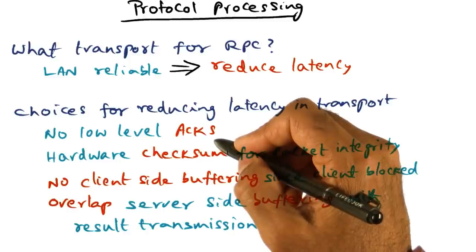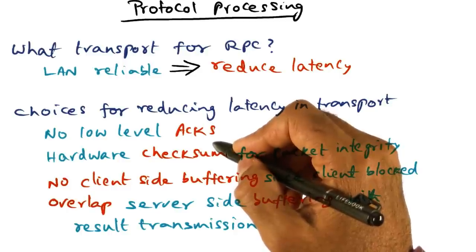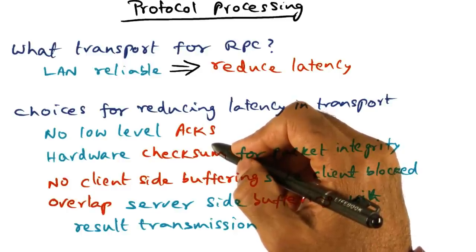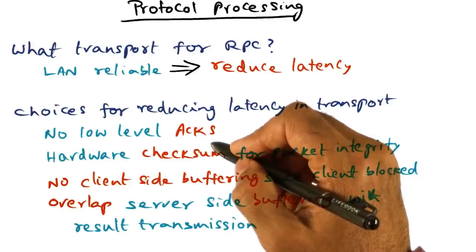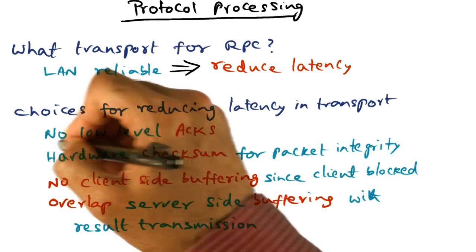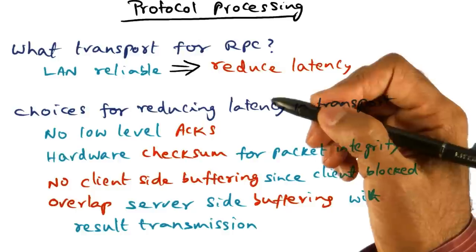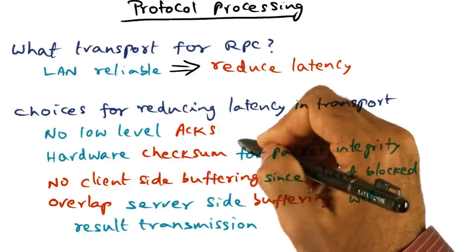Similarly, you don't have to have a low-level acknowledgement saying 'I received the results,' because if the results were not received, the client is going to resend the call. The high-level semantics of RPC can itself serve as a way to coordinate between the client and the server, and we can eliminate low-level acknowledgements. Eliminating low-level ACKs reduces the latency in the transport.